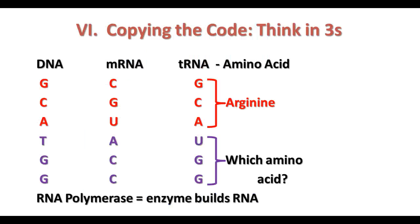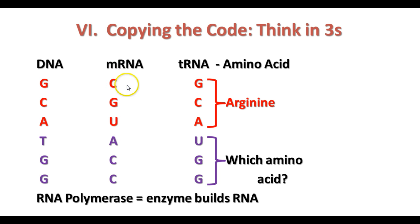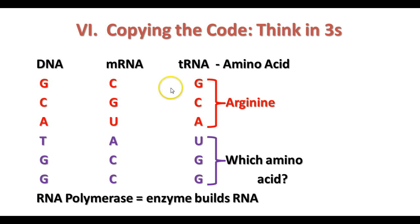So to transcribe or copy the code, we have to think in terms of these three-letter words called codons. In the DNA, we have a sequence GCA, which codes for CGU in the messenger RNA. This is the codon for the amino acid arginine. The transfer RNA is complementary to the messenger RNA — it has the same sequence as the DNA, and it carries that arginine into place.